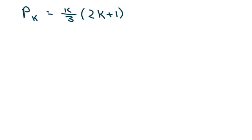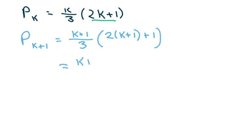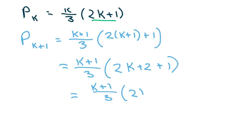And the next one. And we're going to talk about this in the next slide. So p sub k plus 1 equals k plus 1 over 3. And then this is going to be 2 times k plus 1 plus 1. I don't want to raise that too high. So this will be k plus 1 over 3 times 2k plus 2 plus 1, which equals k plus 1 over 3 times 2k plus 3.